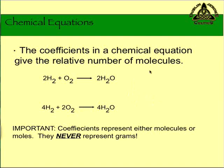The coefficients in a chemical equation give the relative numbers of molecules. For example, two molecules of H2 produces two molecules of H2O and it requires one molecule of O2. If I double the amount of H2 to 4, that means I would need to double the amount of O2, which would also double the amount of water. The coefficients can represent either molecules or moles. One thing that's very important is that these coefficients never represent grams.